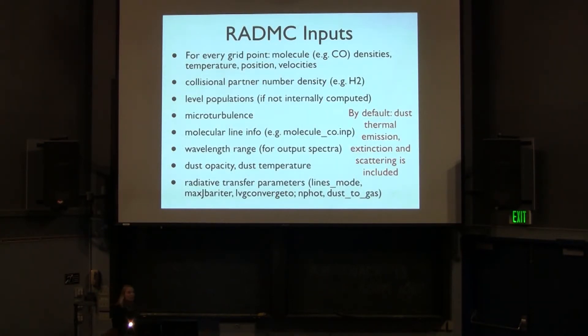So there are a number of inputs that you will need when setting up a problem. First, you need to pick a molecule. You then need the densities for that molecule, the temperature, the position, the velocities if you're doing non-LTE. If the molecule is being collisionally excited, which in reality it probably is by a number of things, then you also need to specify the information for the collisional partners. You'll need to specify the level populations if you're not having RADMC3D compute them, some level microturbulence. You'll need your molecular line input file. This is, for example, molecule-co.inp, and this is exactly what you can download from the Leiden database.